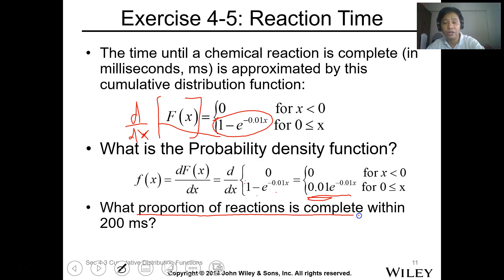So that's the probability density function. So what proportion of the reaction is complete within 200 millisecond? Pag cumulative, this is for cumulative proportion na siya, so probability. Ang gagamitin nyo na ay yung cumulative distribution function. So substitute nyo lang yung 200 doon, so that will be 1 minus e to the negative 0.01 times 200. The answer is 0.8647.